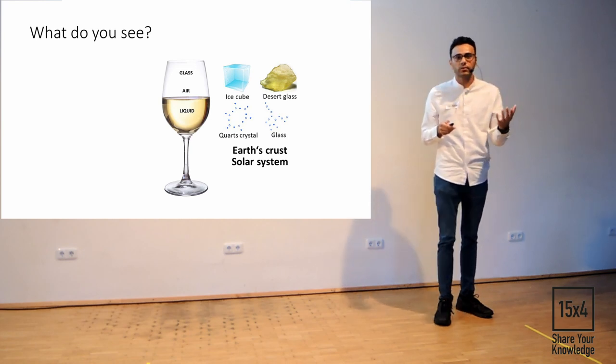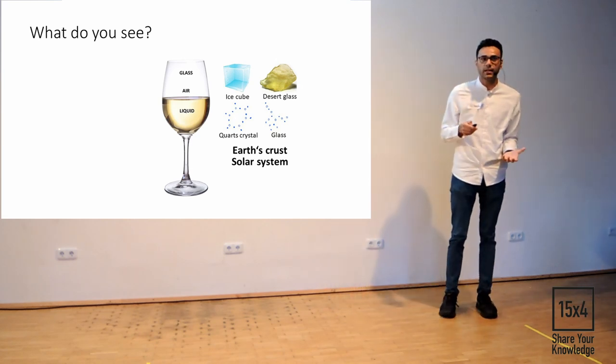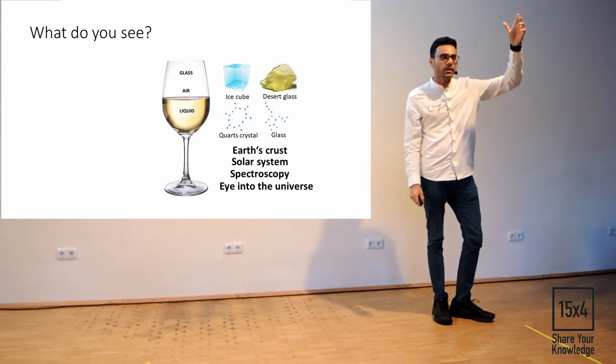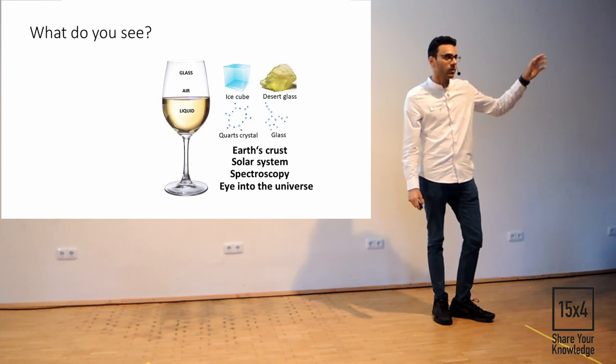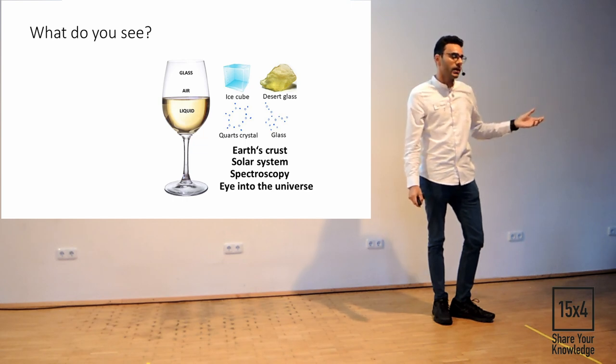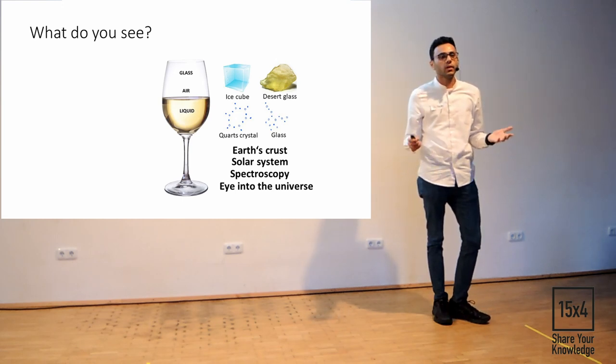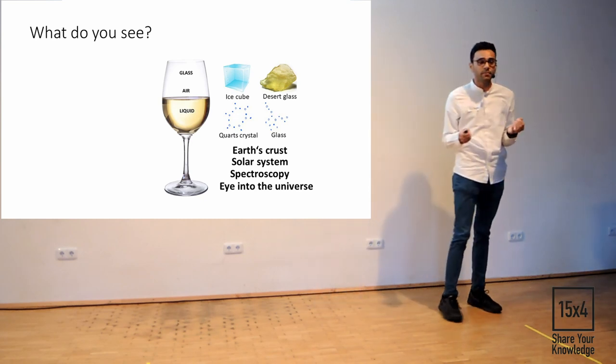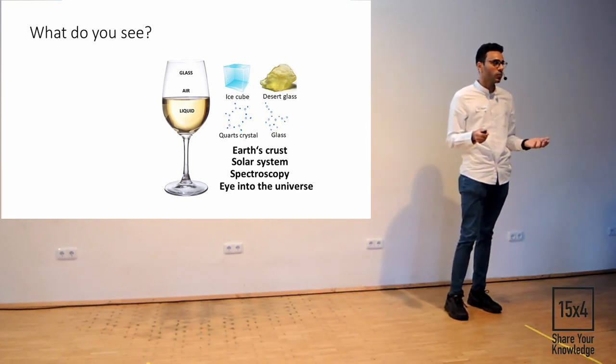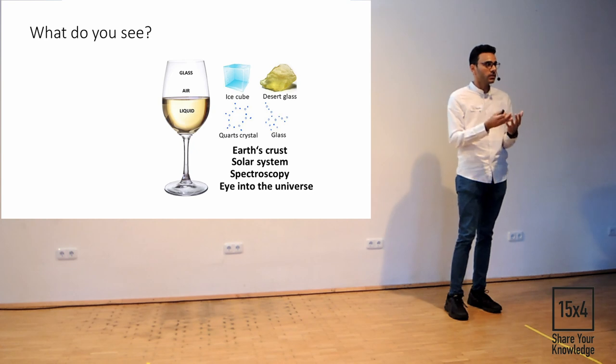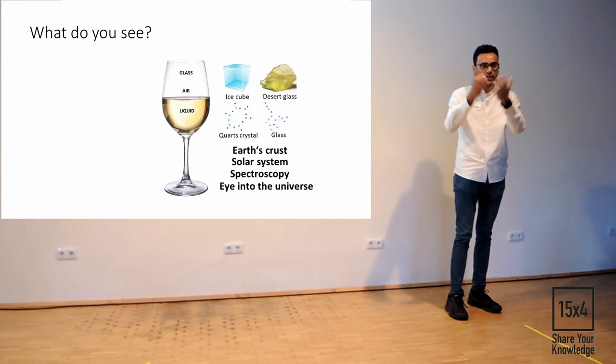If you think about that, it will tell you about how you can form atoms through stars. You can find out about the age of the Earth if you try to understand how glass is formed. And then from that, you can understand how solar system is formed, how planets are formed. If you focus on glass, glass provides you an eye into the universe.